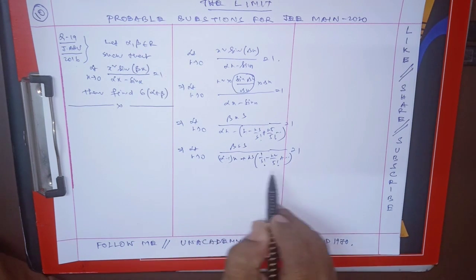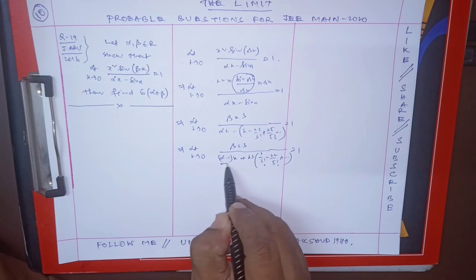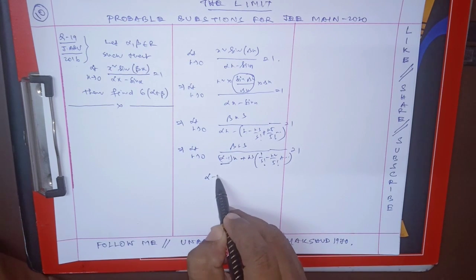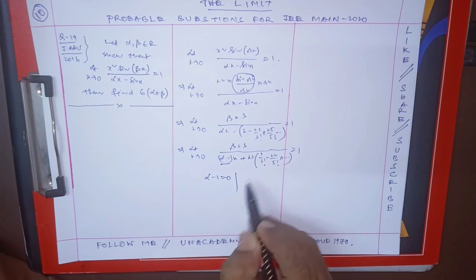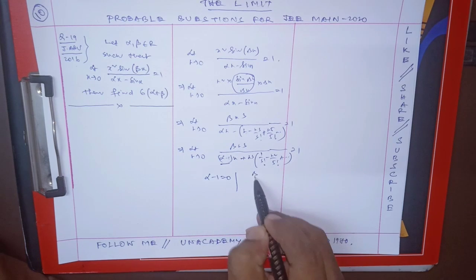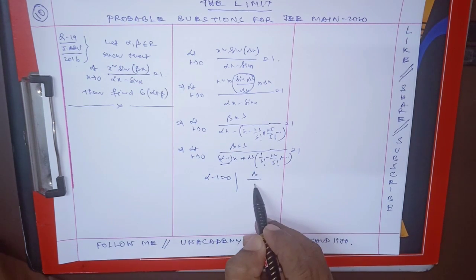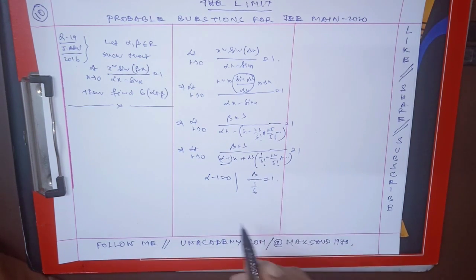And x cubed is equal to 1. When I divide by x cubed, beta minus alpha times 1 by 6 must equal zero. So beta by 1 by 6, that is equal to 1.